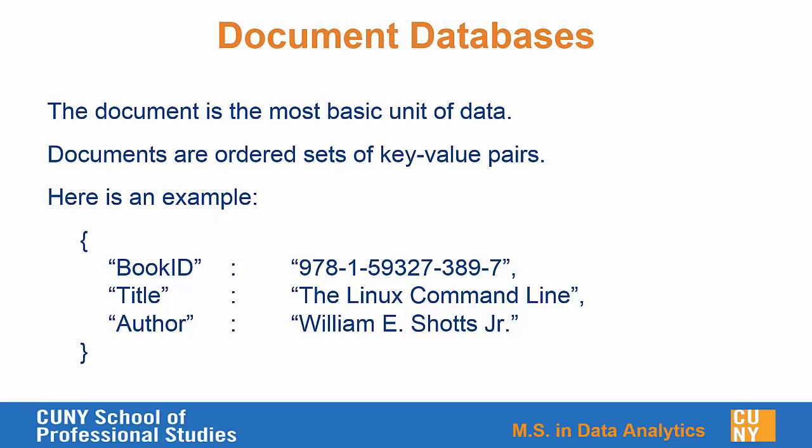Here's a simple example of one document in a document database. We have a book ID, which is in this case the ISBN for the book, the title of the book, and the author of the book. So far this might look a lot like what we would have for a SQL database, where this might be one row.